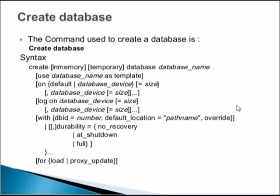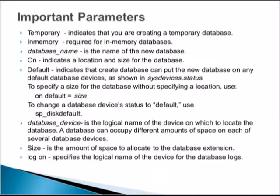The LOG ON clause specifies the log devices location in the same way. The first ON keyword specifies the device for database storage, and LOG ON specifies the log location. With DBID you can specify a default location, and there are also durability, no recovery, and shutdown options, which will be covered in coming slides.